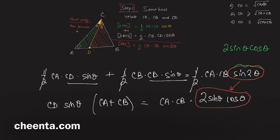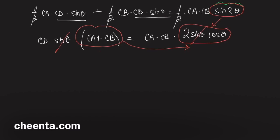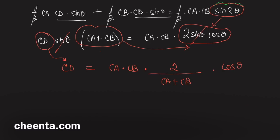We can cancel off sine θ from both sides, then bring CA + CB to the right-hand side. So CD is equal to CA times CB times 2 divided by (CA + CB) times cosine θ. I've written this in a very suggestive manner — try to manipulate this part on your own.